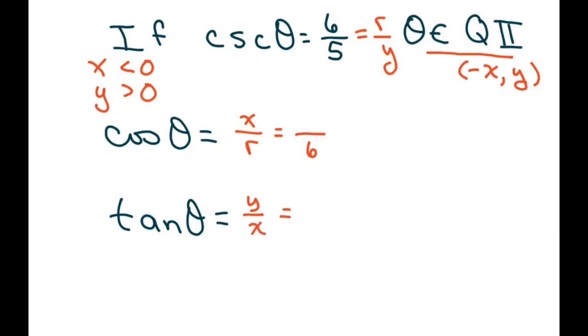And my y is 5. So it's 5 over x. And we don't have our x. So to find your x, we're going to do x squared plus y squared equals r squared. x we don't know. y is 6. So 6 squared is 36.